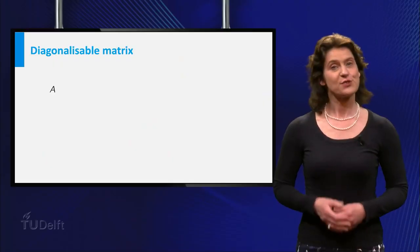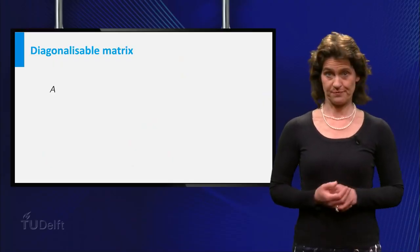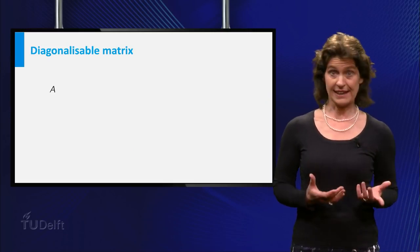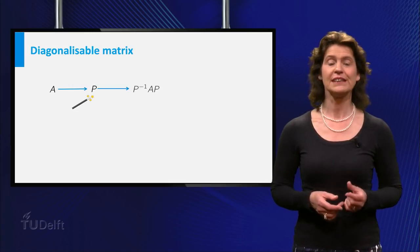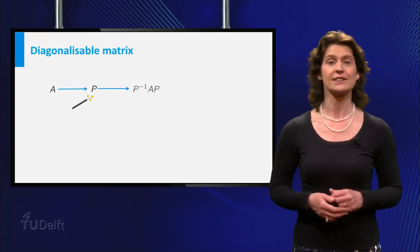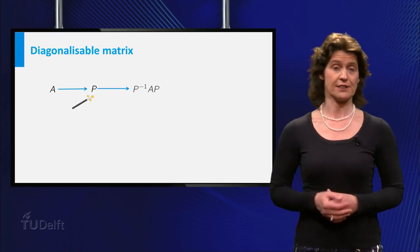Does it feel like I have cheated on you by coming up with this magical matrix P? Is it always possible to find such a matrix P that does the trick? Let's first explain what the trick was. You started with the matrix A, then you came up with the matrix P and it turned out that P inverse AP is the diagonal matrix, which made things a lot easier.